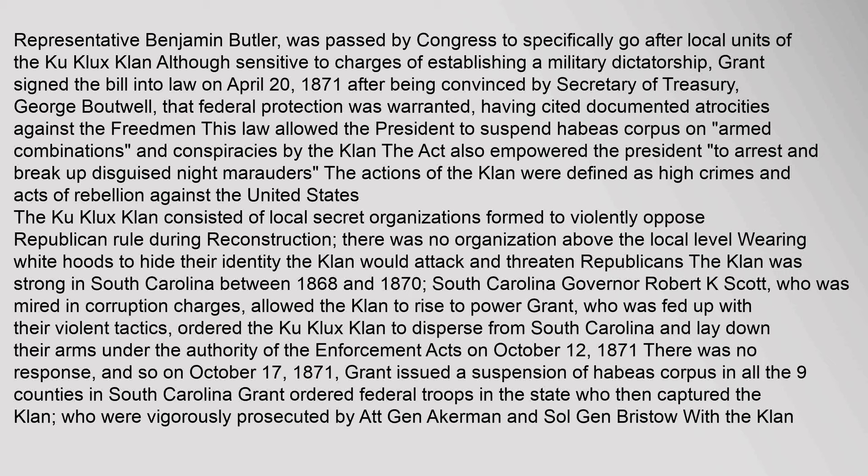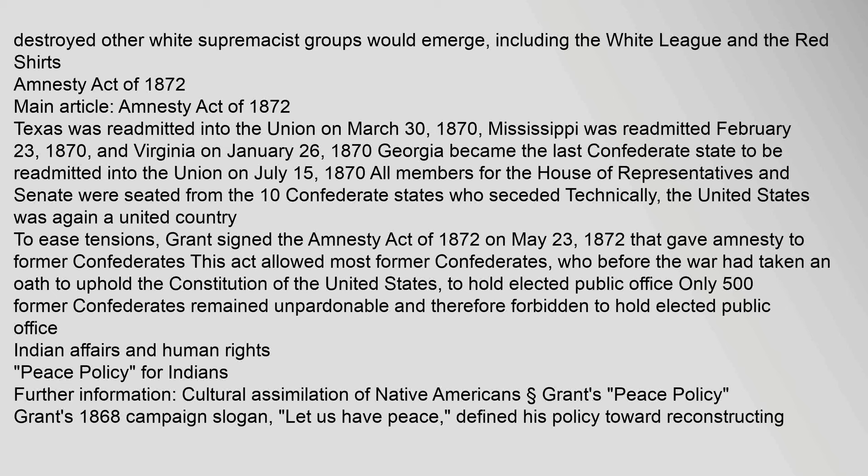This law allowed the President to suspend habeas corpus on armed combinations and conspiracies by the Klan. The Ku Klux Klan consisted of local secret organizations formed to violently oppose Republican rule during Reconstruction. On October 17, 1871, Grant issued a suspension of habeas corpus in all nine counties in South Carolina and ordered federal troops who then captured the Klan, vigorously prosecuted by Attorney General Ackerman and Solicitor General Bristow. With the Klan destroyed, other white supremacist groups would emerge, including the White League and the Red Shirts.